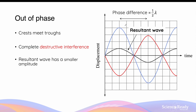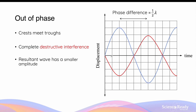For waves to undergo destructive interference, their phase difference is exactly half a wavelength. You can see the crests of the two waves are separated by four units in time, and the entire wavelength of one of the waves is eight units. So four divided by eight — that's exactly half the wavelength. To help visualize and determine what the resultant wave looks like, we consider the corresponding points between the two waves. The crest of the blue wave is four units, whereas the trough of the red wave is three units. So if you do four minus three, the resultant wave only has an amplitude of one unit in the positive direction.